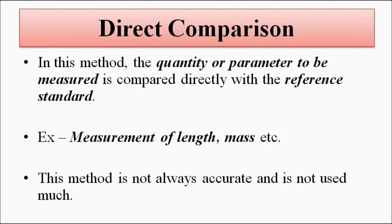One of the simplest examples is the old weighing scale, where a shopkeeper had fixed weights of various values such as 1 kg, 500 grams, 250 grams on one side and placed vegetables or groceries on the other side. When the needle was balanced, it meant the weight of the groceries matched the weights on the other side. That is a very simple example of direct comparison.